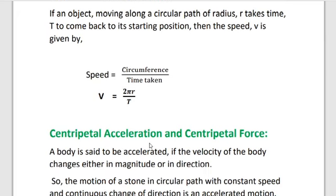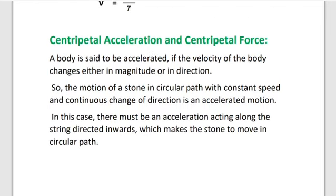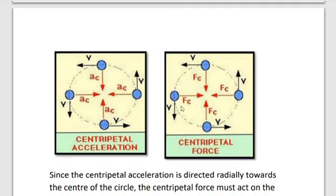Next: centripetal acceleration and centripetal force. A body is accelerated if the velocity of the body changes either in magnitude or in direction. For example, if velocity equals 10 m/s and the magnitude changes to 20, or if the direction of the body changes, it gets acceleration. The motion of an object or stone in a circular path with constant speed and continuous change of direction is accelerated motion. In this case, there must be an acceleration directed towards the center which makes the stone move in a circular path. This acceleration is known as centripetal acceleration.